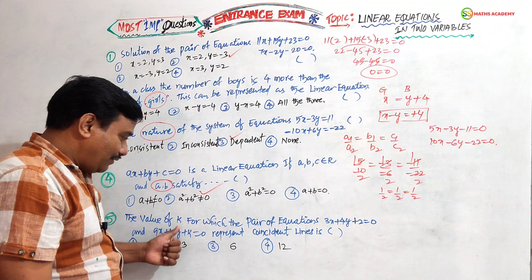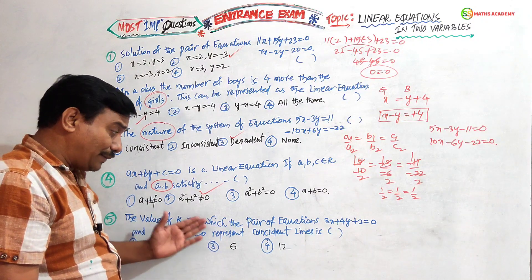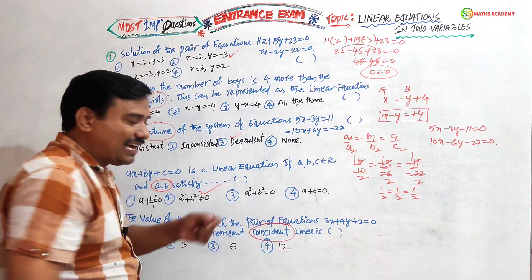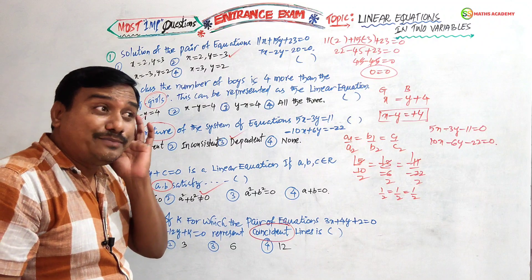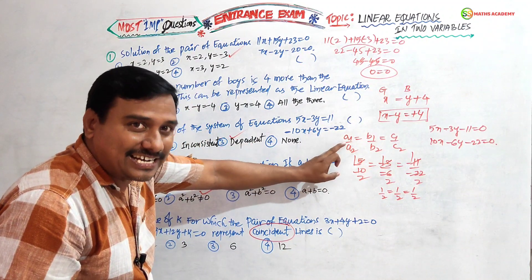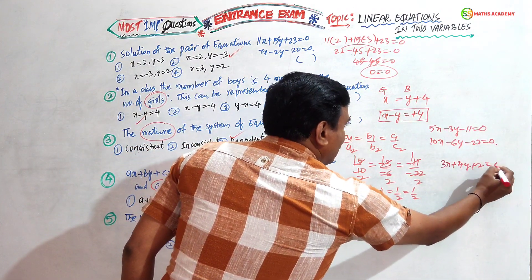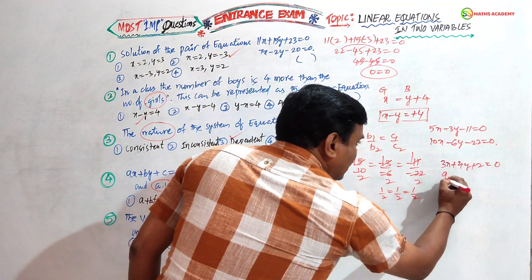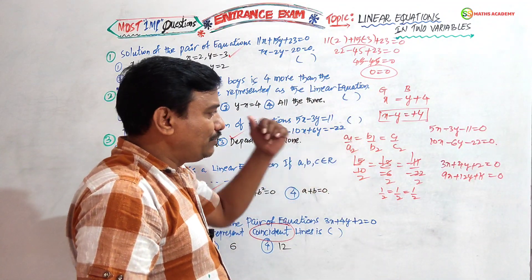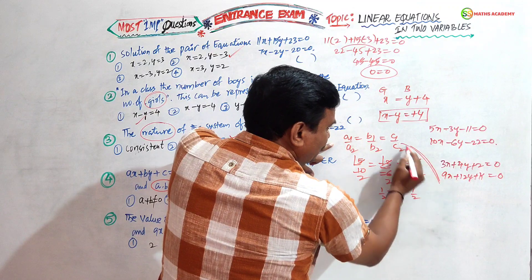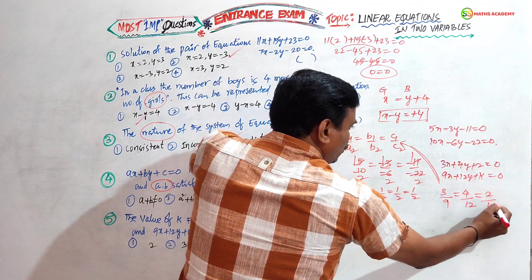Fifth question: the value of k for which the pair of equations 3x + 4y + 2 = 0 and 9x + 12y + k = 0 will be coincident. Coincident means all three ratios must be equal. So: a₁/a₂ = 3/9, b₁/b₂ = 4/12, c₁/c₂ = 2/k.